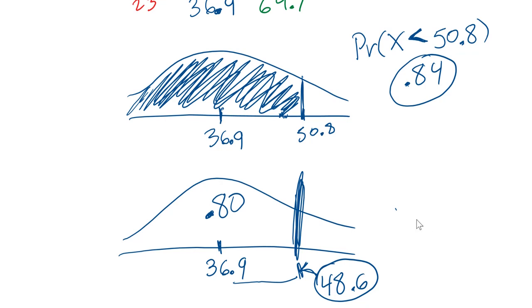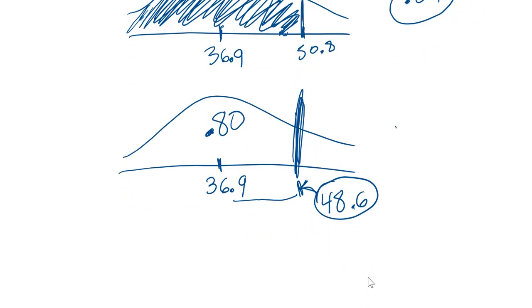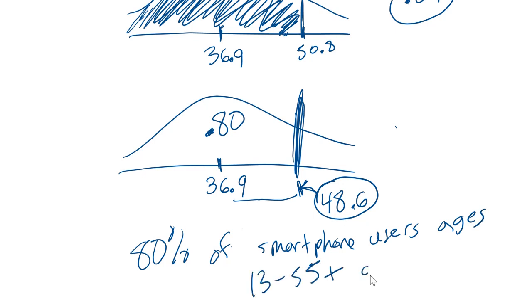And if you were to write a sentence that describes what this 48.6 represents, you would say that 80% of smartphone users ages 13 to 55 plus are less than 48.6 years old.